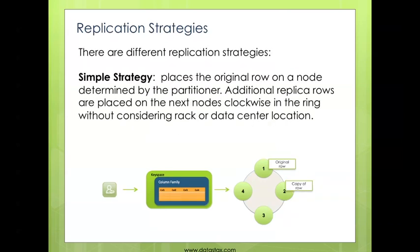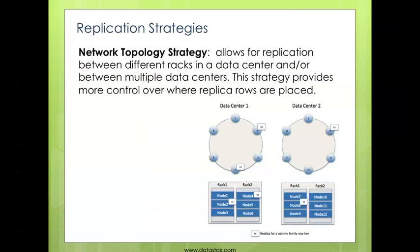There are a couple different replication strategies you can use. The simple strategy simply places the original row based on its partitioner and then a copy of that row is going to be put on the next node walking clockwise throughout your cluster. The network topology strategy is a little bit more sophisticated — it gives you a little bit more control over where your rows are placed in your database cluster. This is what allows you to place different rows on certain racks in your data centers or to carry out geographical replication between one or more data centers.